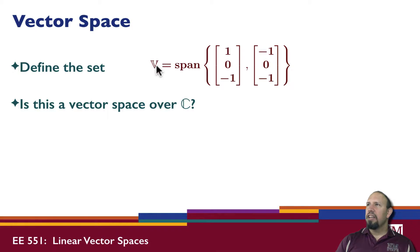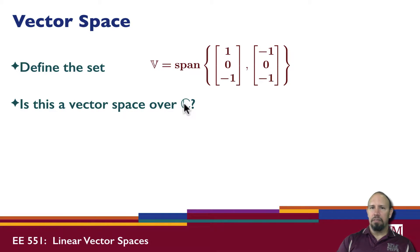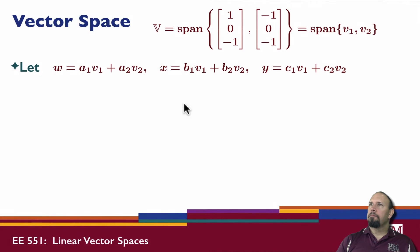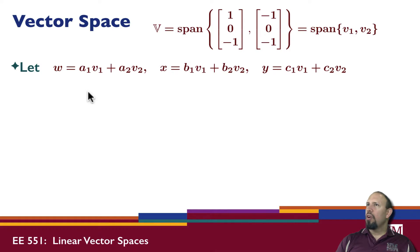Now what about vector spaces? I'm defining V to be the span of two vectors, and the question is: is this a vector space over C, the field of complex values? I define W, X, and Y as vectors in this span, meaning they are linear combinations of V1 and V2.